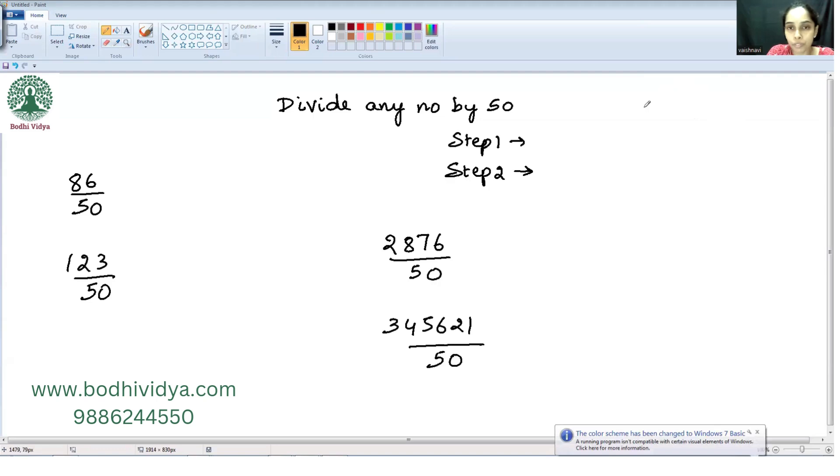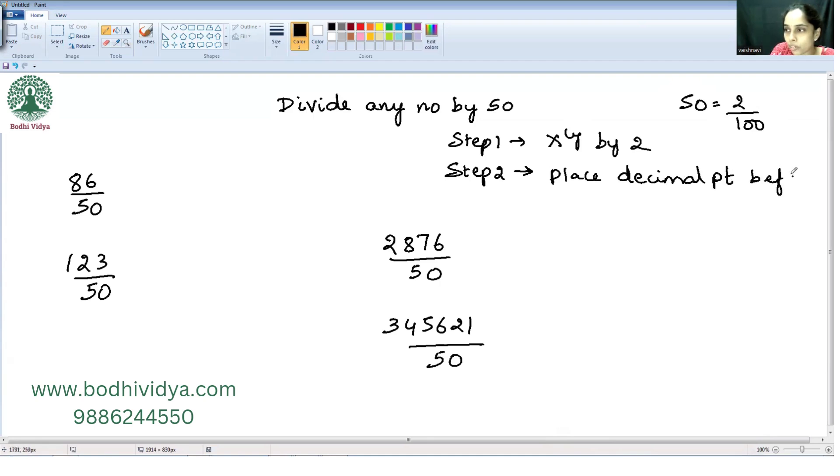So 50 can be interpreted as 100 divided by 2. Since we are dividing, at step 1, we need to multiply the number which has to be divided by 50 by 2, and then place the decimal point before the last 2 digits.